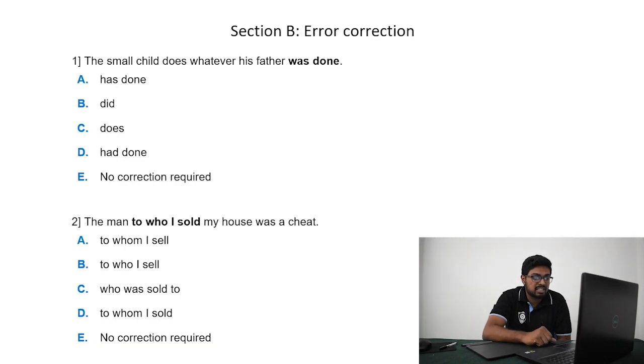The first question is: a small child does whatever his father was done. This is the sentence which is given. I need to mention that there are 12 types of tenses in English: present tense, past tense, future tense, past perfect, present continuous, etc. But mainly if you have a general idea about past, present, and future, that is more than enough. Coming back to the question, the small child does whatever his father does goes perfectly well. He has done doesn't make any sense. Did, the tenses don't match. No correction required is definitely not an answer because the sentence is wrong. So the answer would be does.